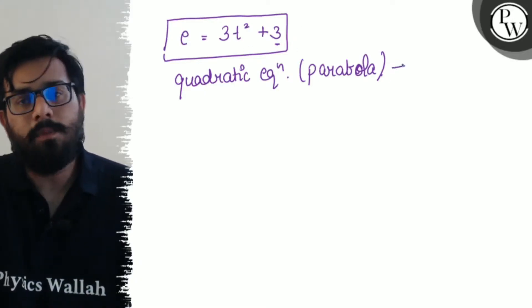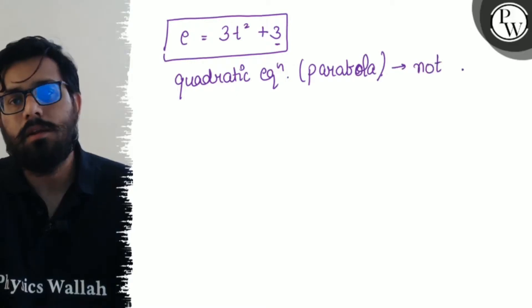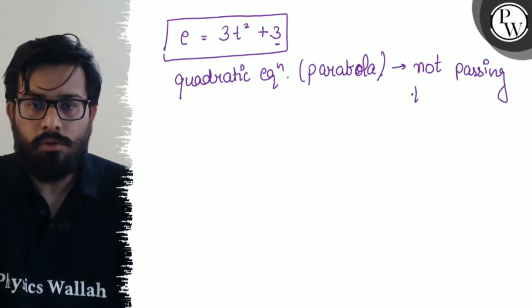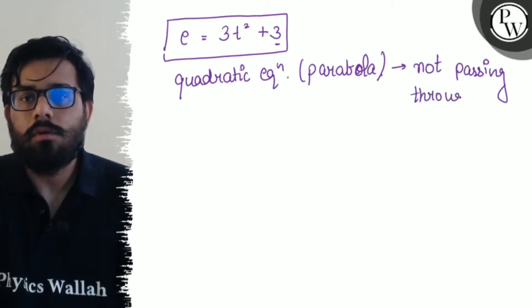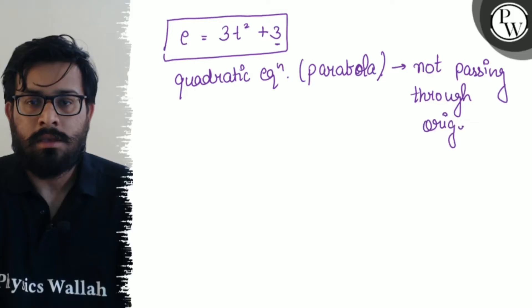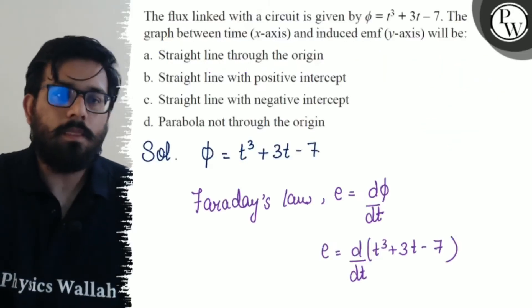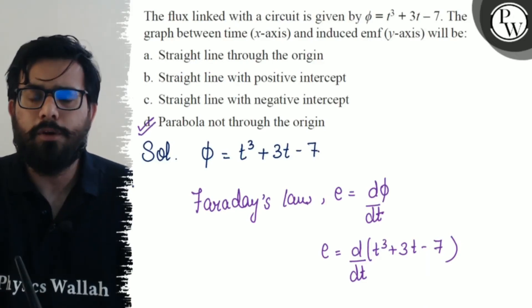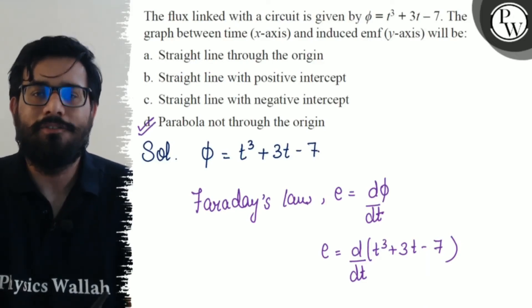This will not pass through the origin, so this equation has some intercept as well. The parabola not passing through the origin, and this is your fourth option: parabola not through the origin, which is your final answer. I hope you got the concept of this question. All the very best.